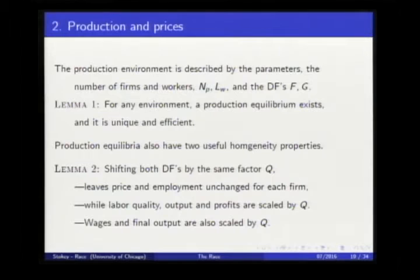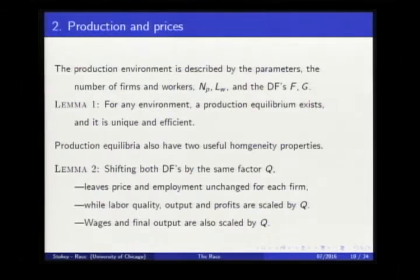The production equilibrium is described by all the parameters — the number of producing firms, the number of working people actually engaged in work, and the two distribution functions. It's straightforward to show there's a unique, efficient solution with positive assortative matching.